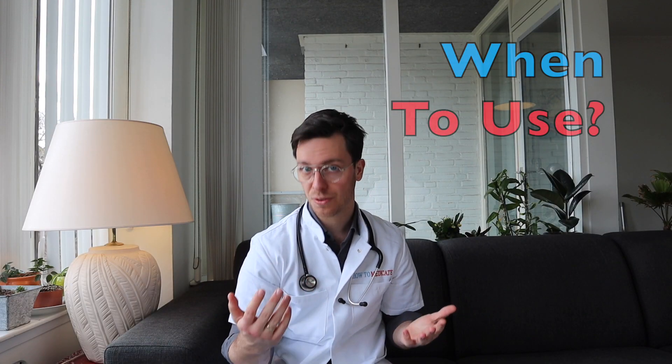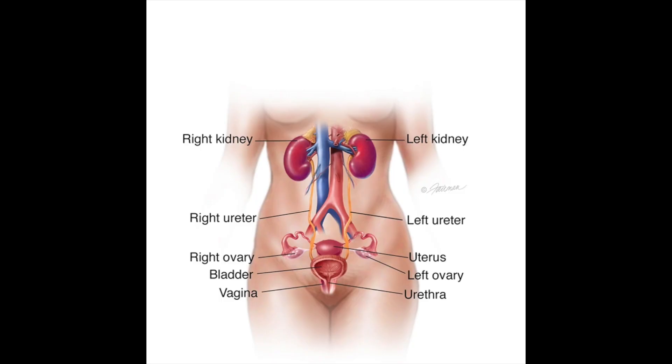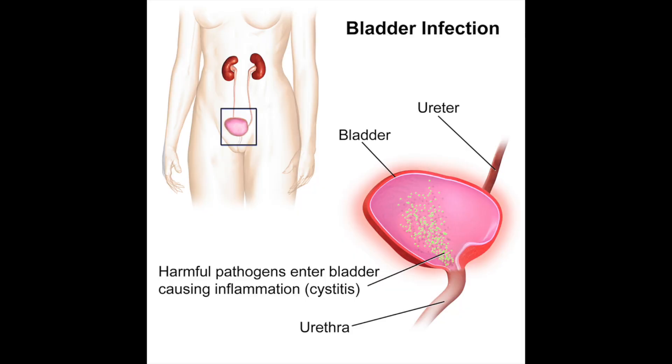Now, when to use nitrofurantoin. It's important to know that it has a very low tissue penetration. This means that it only reaches therapeutic concentrations in your bladder, as this antibiotic is eliminated through your kidneys in your urine. So in your bladder and in your urinary tract you have a very high concentration of this antibiotic, and there it can do its work. Therefore, nitrofurantoin is only used to treat acute lower urinary tract infections.